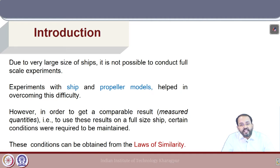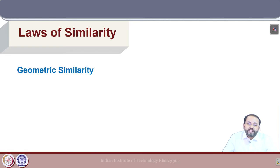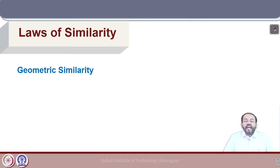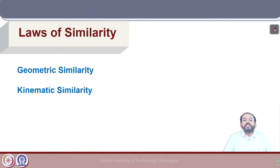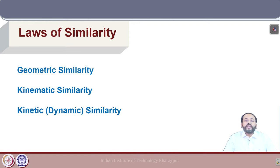The conditions that need to be maintained for testing ship and propeller models are called laws of similarity, which are extensively used in naval architecture and form the basis of model testing. The three types are: geometric similarity, which requires the model and prototype to be geometrically similar; kinematic similarity, which relates the ratio of velocities in model and full scale; and kinetic or dynamic similarity, which requires the ratios of forces in model and full scale to be kept similar.